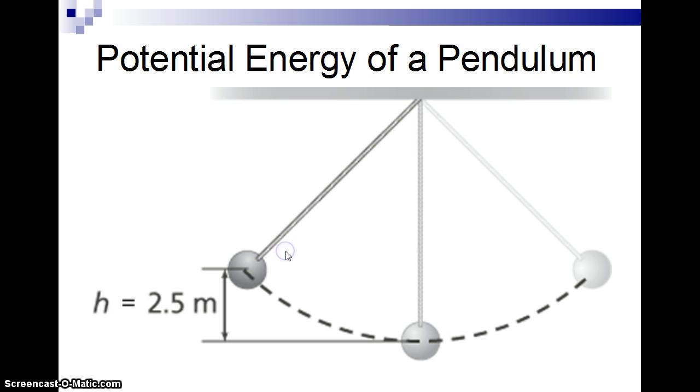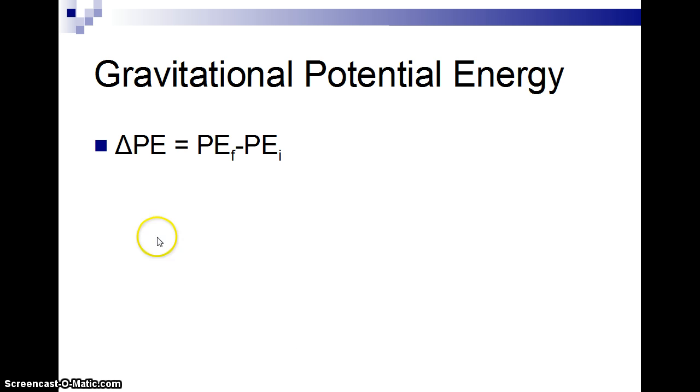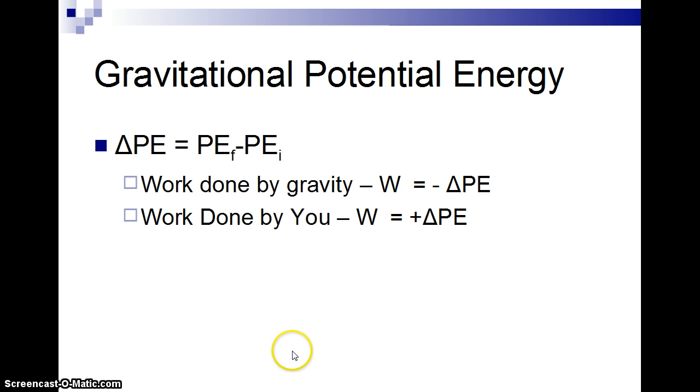So imagine you have a pendulum swinging back and forth. There you have energy, which is going from gravitational potential energy as it's moving along here. And as it starts to swing downwards, down at the bottom, all of that potential energy is turned into kinetic energy and then back into potential energy. So the change in potential energy, whenever I have this delta, the Greek letter delta, it's the final minus the initial, the endpoint minus the beginning.